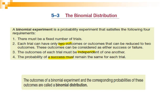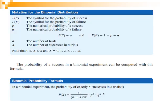The outcome of a binomial experiment and the corresponding probabilities are called the binomial distribution. The notation: P(S) is the probability of success, P(F) is the probability of failure, P is the probability of success, Q is the complementary probability — the probability of failure — equal to 1 minus P. N is the number of trials, and X is the number of successes in N trials.